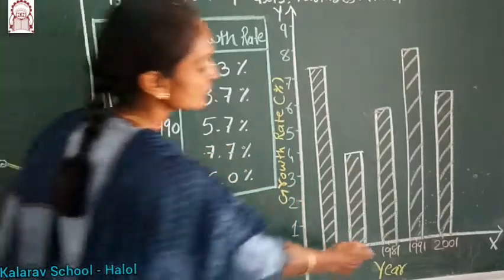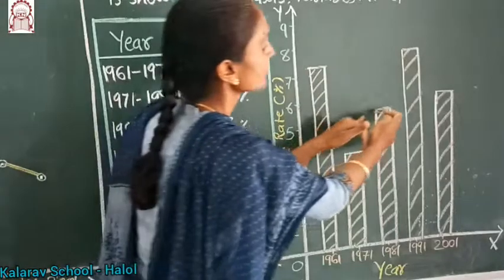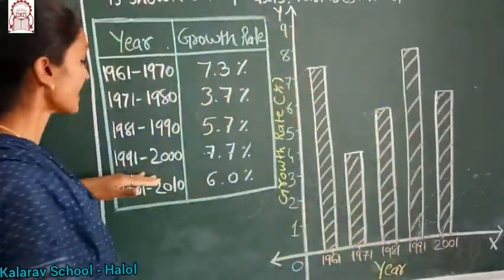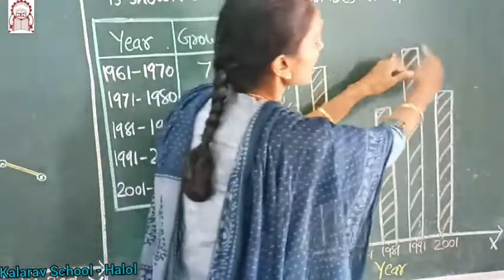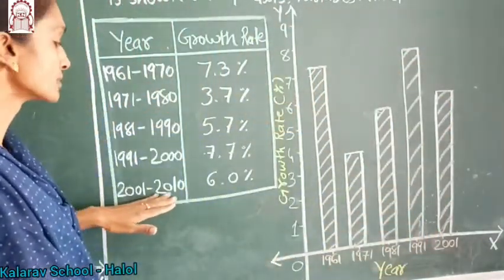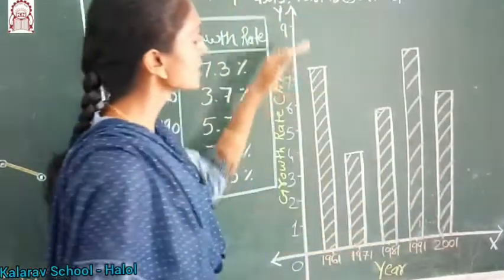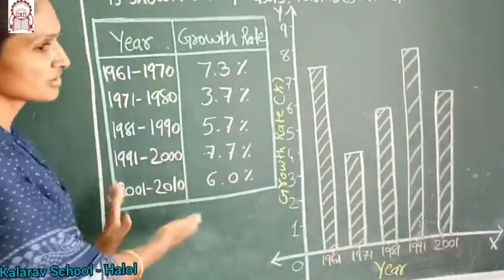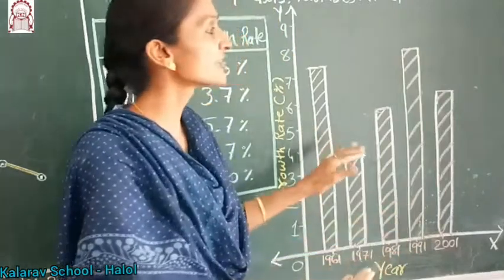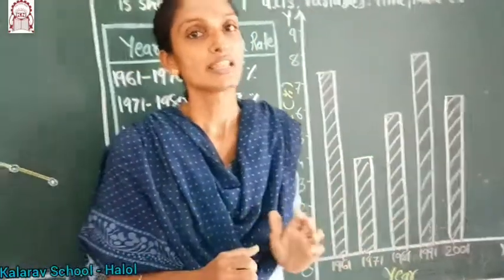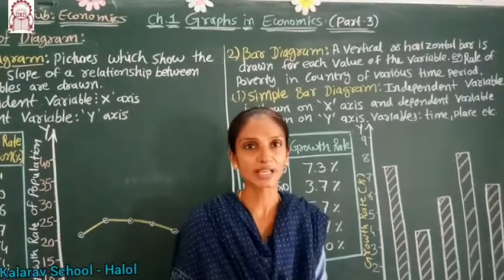For 81 to 90, the value is 5.7 — a little more than 5 — and we place a bar there. For 91 to 2000, it is 7.7, near about 8. Then for 2001 to 2010, the value is exactly 6, so we place the bar at 6. The data and information are placed in pictorial form, making it self-explanatory and easier to understand. In the next session we will continue with cluster bar diagrams and dividend bar diagrams.